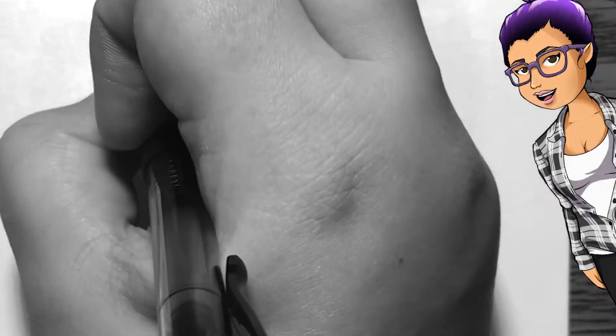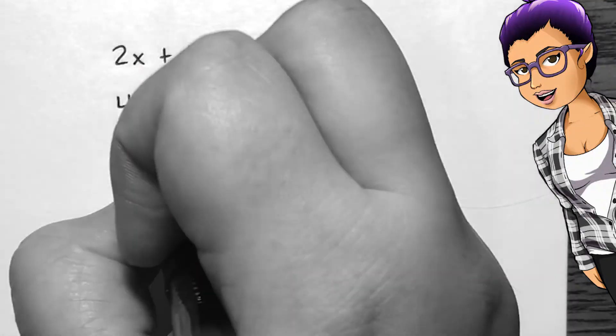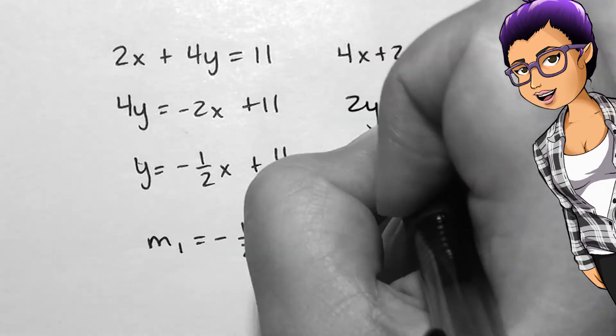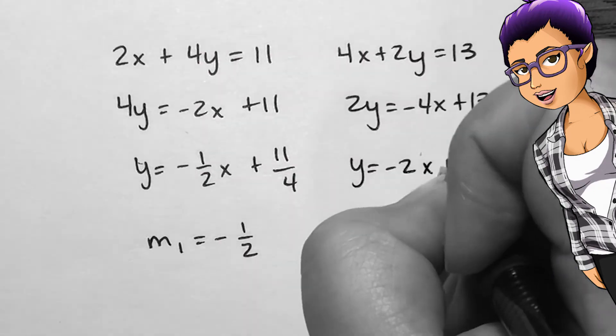If a pair of lines do not have these specific slopes, they will be neither parallel nor perpendicular, like the pair of lines 2x plus 4y equals 11 and 4x plus 2y equals 13.